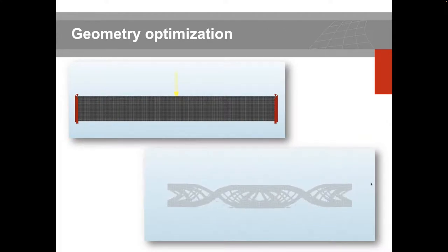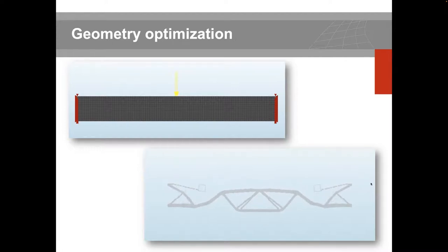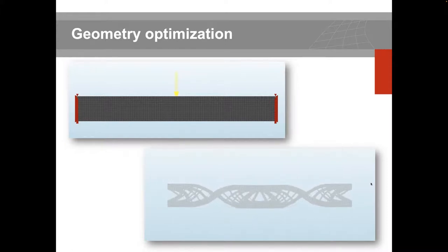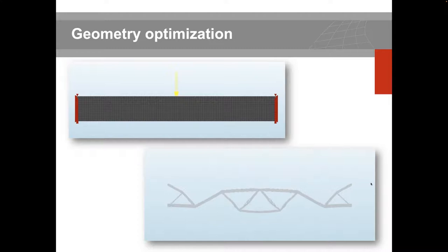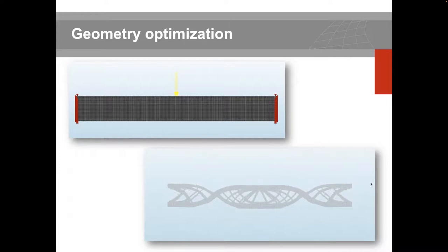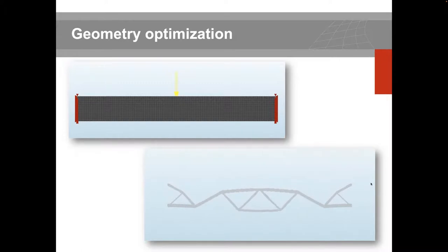Another strong feature in Diana is Python scripting. Python scripting is powerful for geometry optimization with respect to how a model responds to loading, and how you can reinforce and retrofit the model based on load distribution patterns. Combined with other Diana tools, Python scripting is a must-have, especially when dealing with optimization problems.